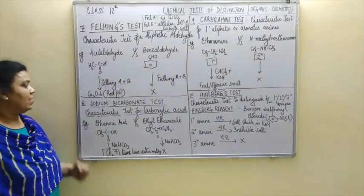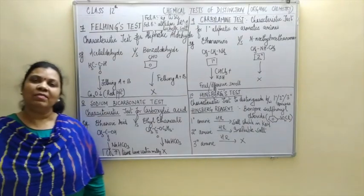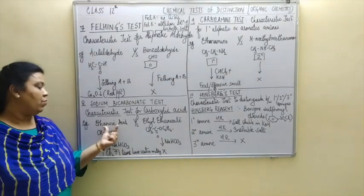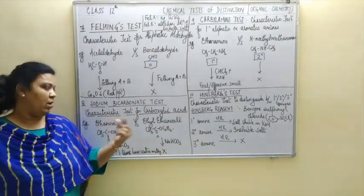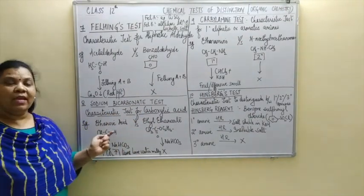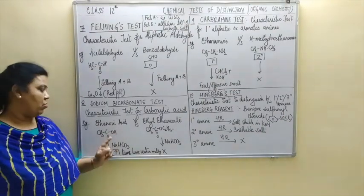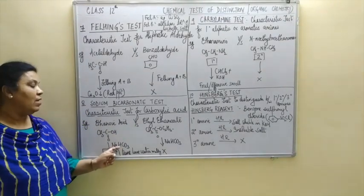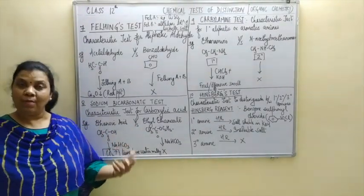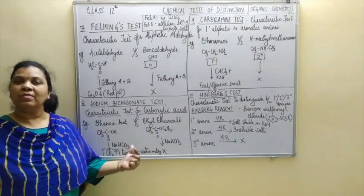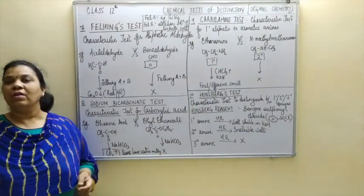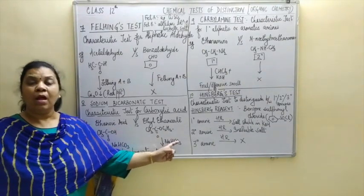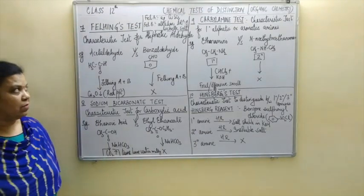Let us now move on to the next test, which is the sodium bicarbonate test. It is the characteristic test for carboxylic acids. For example, to distinguish between ethanoic acid versus ethyl ethanoate (which is an ester): ethanoic acid has the structure CH3COOH. On adding sodium bicarbonate or sodium carbonate, you will get a brisk effervescence of a colorless odorless gas, which will pass through lime water and turn lime water milky. But no such observation on addition of sodium carbonate or sodium bicarbonate will appear in case of esters.